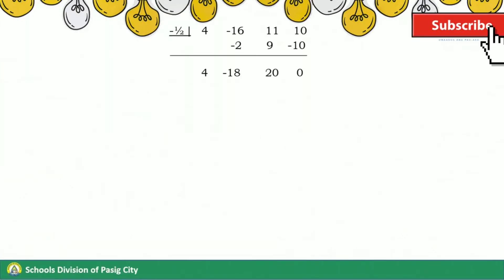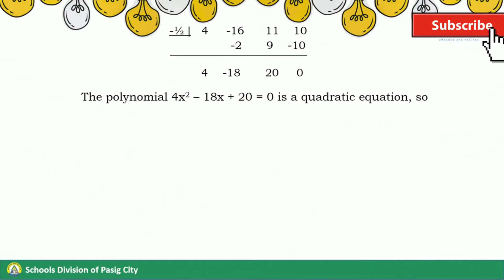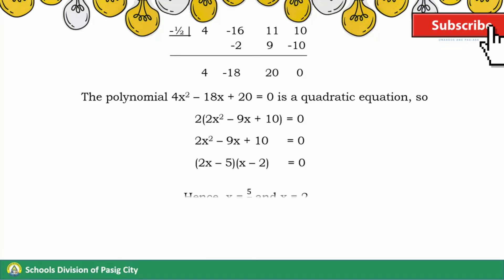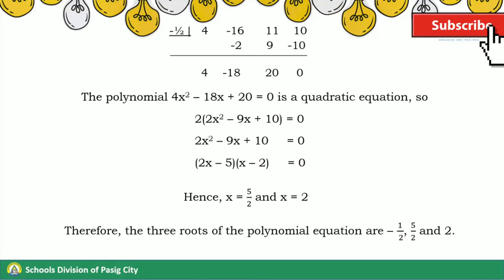The depressed equation 4x² − 18x + 20 = 0 is a quadratic equation and can be factored using other factoring techniques. Applying the zero product property to solve for the two values of x, we have x = 5/2 and x = 2. Therefore, the three roots of the polynomial equation are −½, 5/2, and 2.